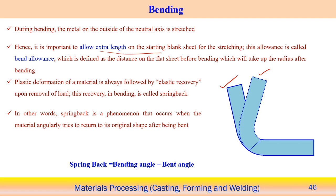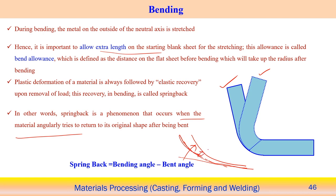The extra length can be calculated based on the elastic recovery of the material. This elastic recovery in the case of bending operation is known as elastic springback. The design of the bending operation must consider the elastic springback effect. This springback effect occurs when the material angularly tries to return to the original shape. For example, if we bend a material to a certain angle, when we release the load it will come back by some recovery angle — that is known as the springback effect. Springback equals the bending angle minus the bent angle after releasing the load. The difference between these two is the springback angle.